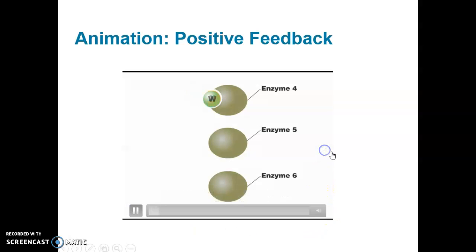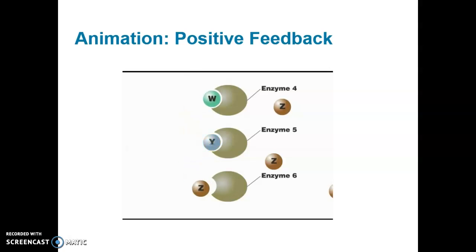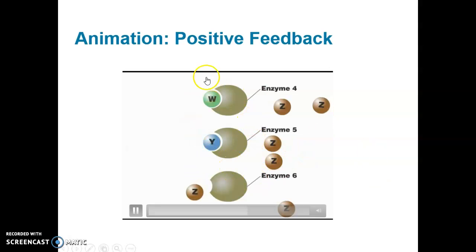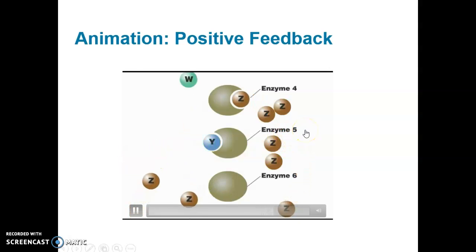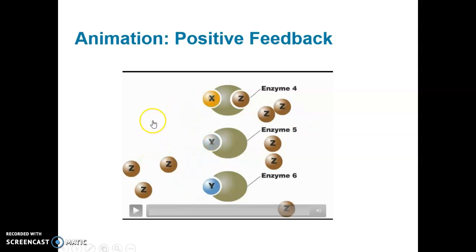In positive feedback, a product of the reaction sequence enhances the action of one of the enzymes, increasing the rate of production of the products. Positive feedback is less common than negative feedback in living systems. The formation of molecule Z, as it accumulates, makes the whole process go faster and faster — the opposite of what we saw with negative feedback.